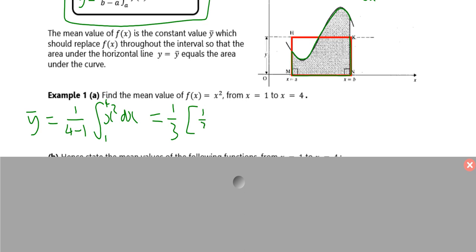If you integrate x squared, you get a third x cubed between 4 and 1. That's a third into, if you sub in 4, you get 4 cubed, a third times 64, which is 64 over 3. Take away a third times 1 cubed, which is a third times 1, which is a third.